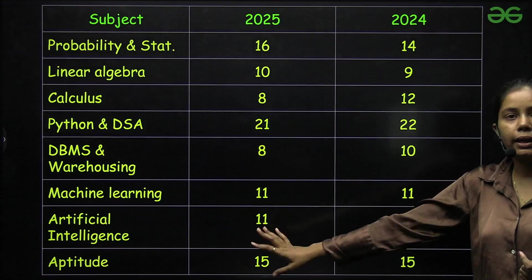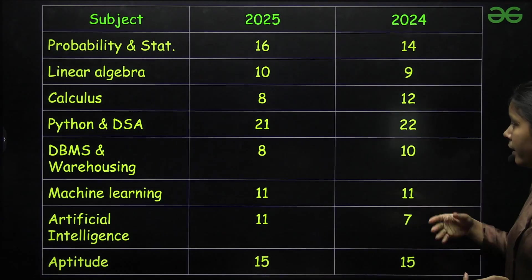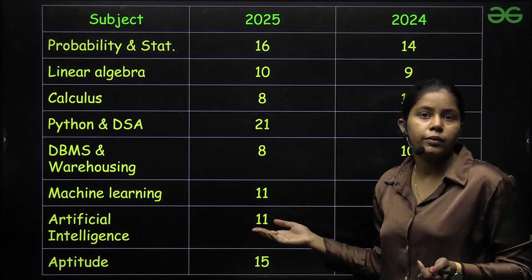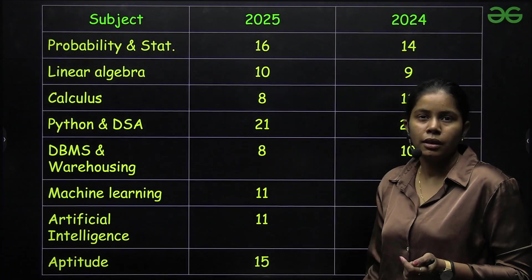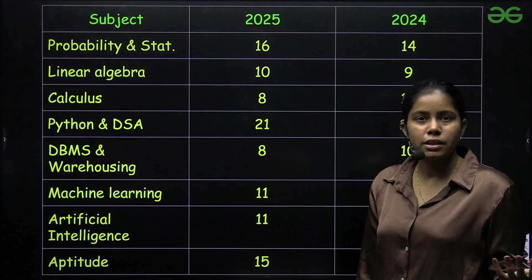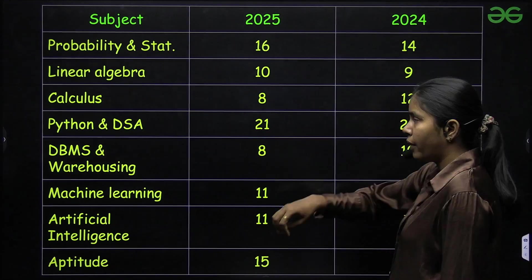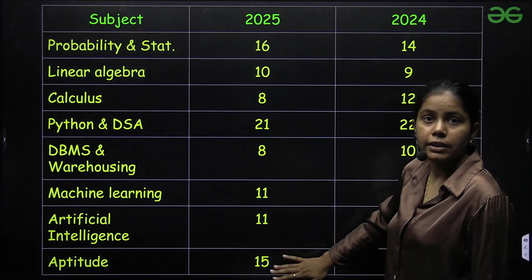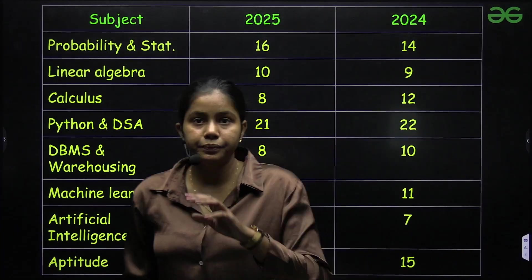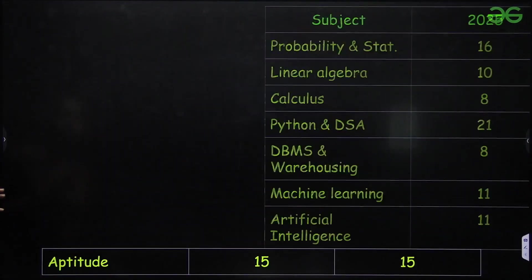Because most of the, if you count, we have seven to eight subjects, seven subjects and eighth one is aptitude. That's why you can see most of the subject weightage is two digits only, except DBMS and calculus. Calculus syllabus is small as well, but you have to study in depth. So this is the weightage criteria.